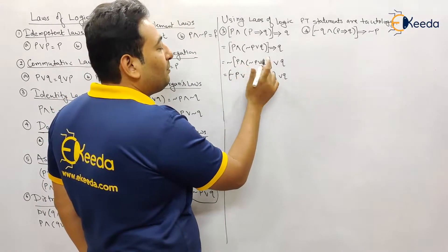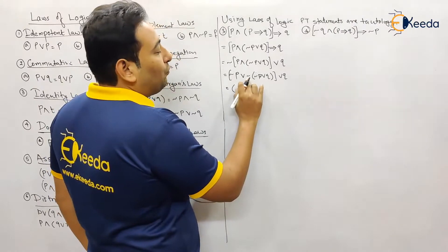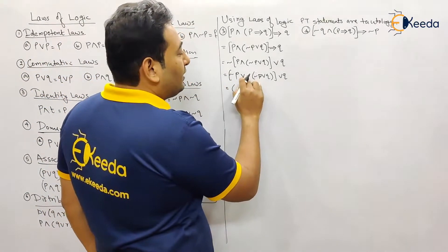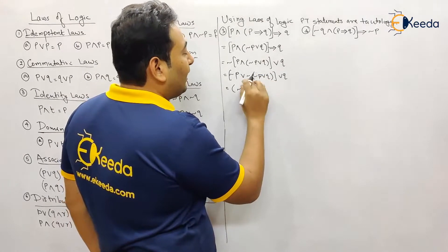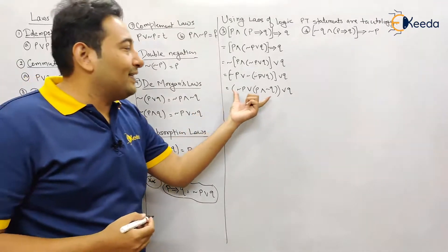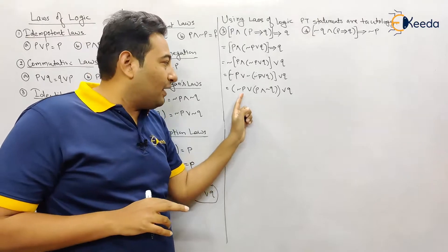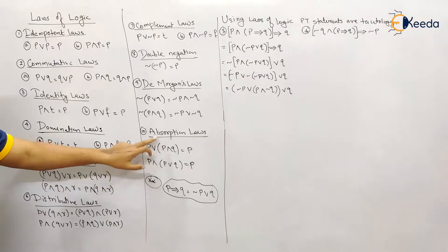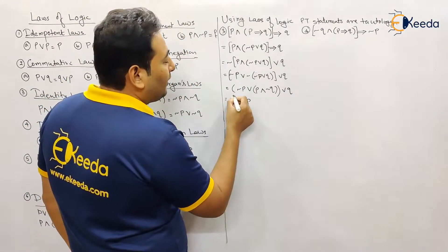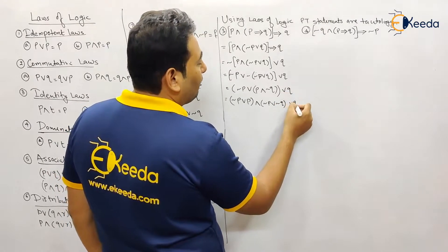Taking the negation inside: negation p becomes the outer term, and becomes or, and we take the negation into the bracket. Negation of negation p is double negation, which gives p. The or becomes and, and we get negation q. So we have: negation p or (p and negation q) or q. Inside the bracket, the signs are different (or and and), and all terms are different, so we apply the distributive law.